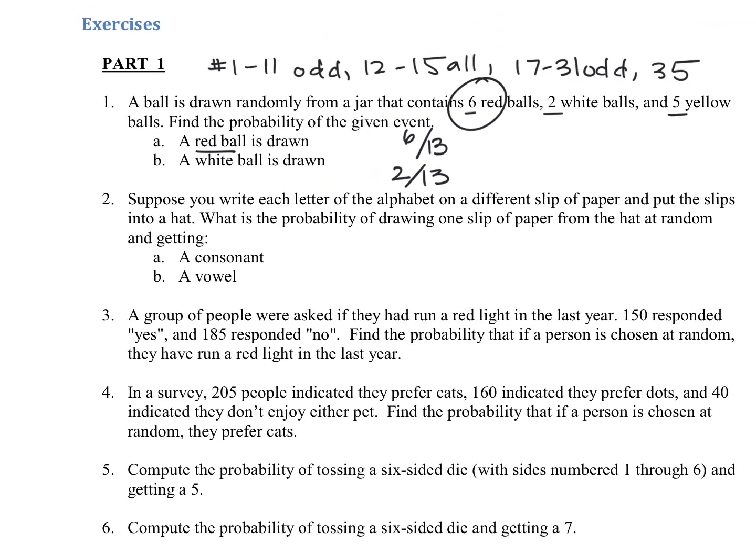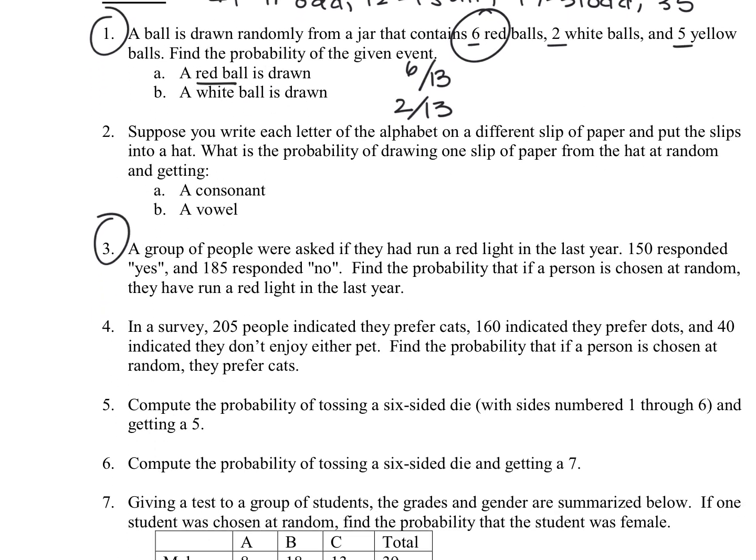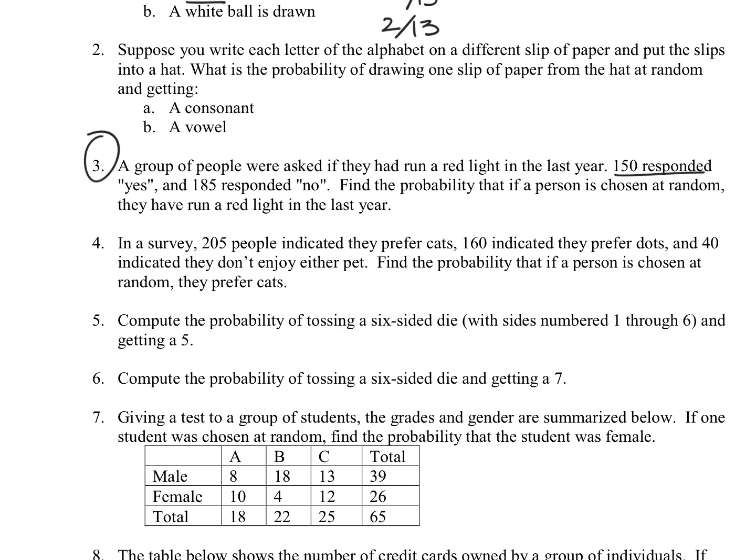All right, so question number three. A group of people were asked if they had run a red light in the last year. 150 responded yes, and 185 responded no. Find the probability that a person chosen at random has run a red light in the past year. So that would be 150 out of the total number of people that were surveyed, so that would be 150 plus 185. We're talking about 150 out of 335, so that's about 44.8%.